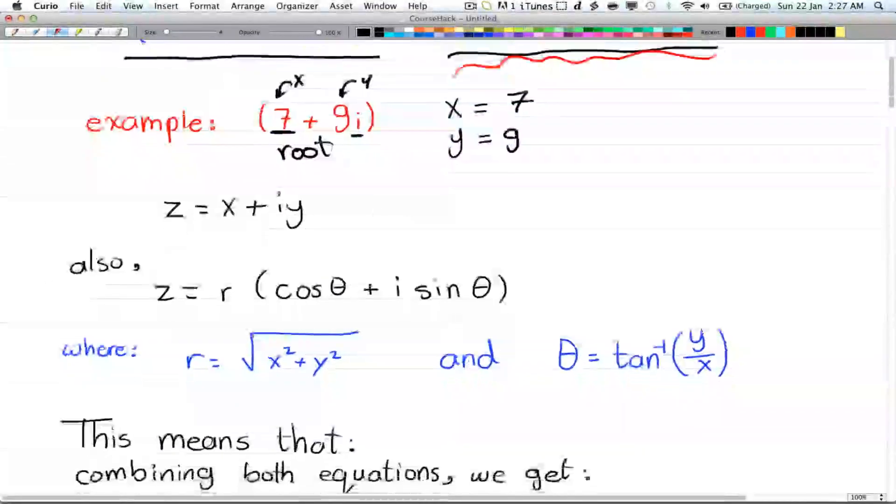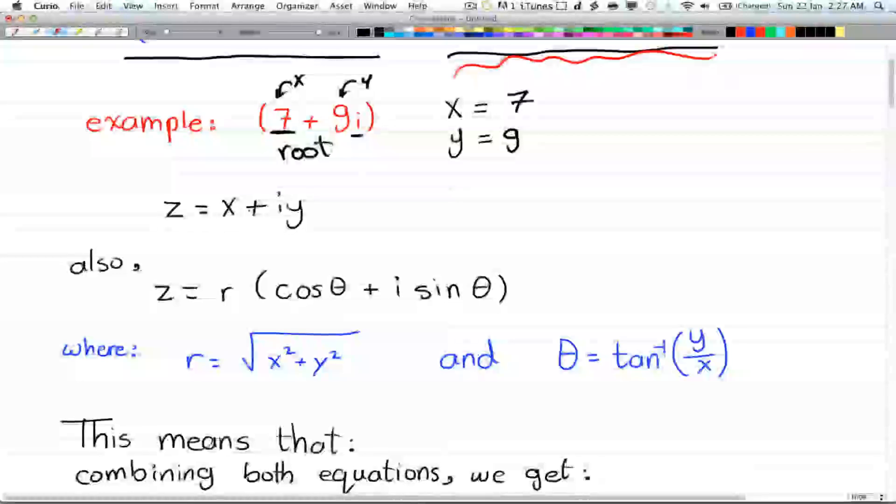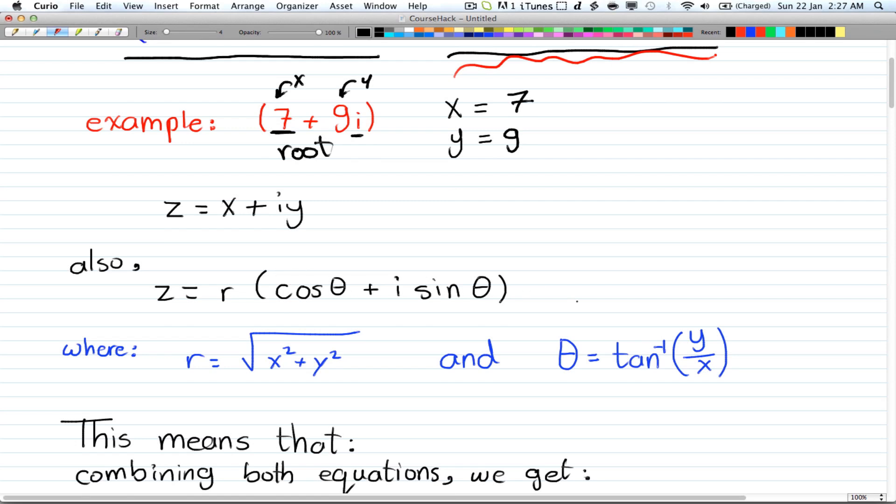There's also a formula that z = x + iy, and also z = r(cos θ + i sin θ).